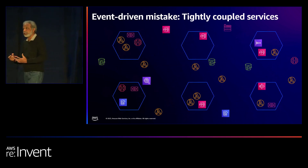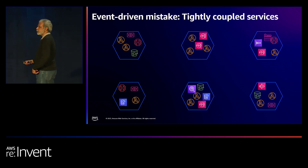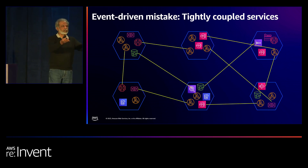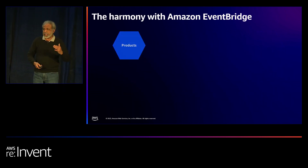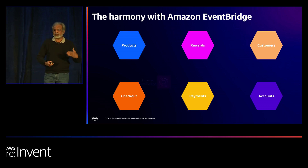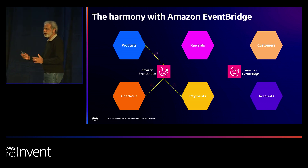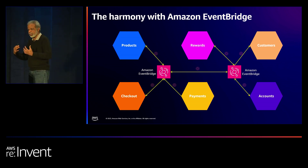This is where EventBridge comes in. When you have a few microservices, they all produce events. Rather than always crisscrossing to resources within their own boundary, they share events via EventBridge event bus. Events can flow between buses, and the whole situation becomes harmonious. Microservices can be independently deployable and each one is separate.